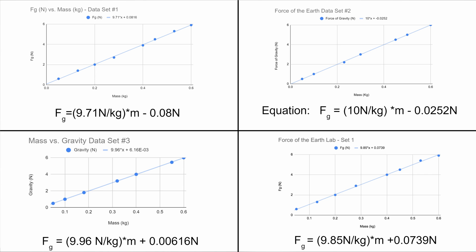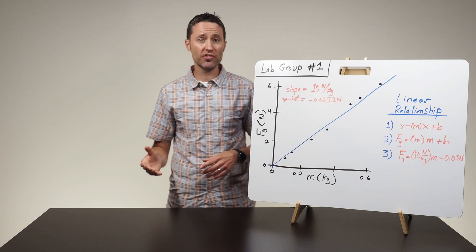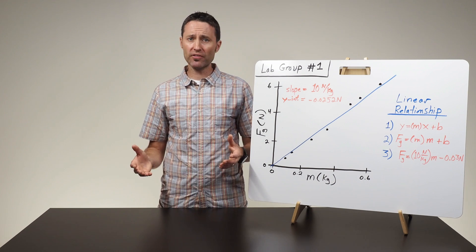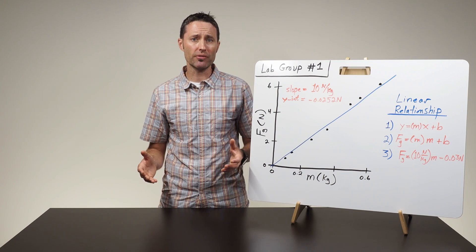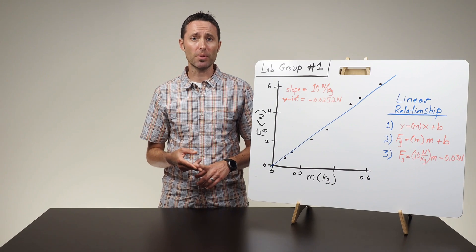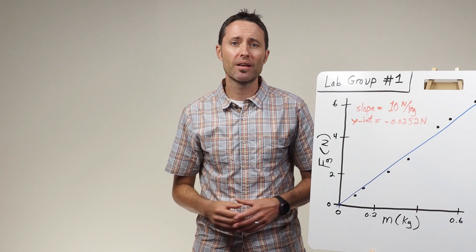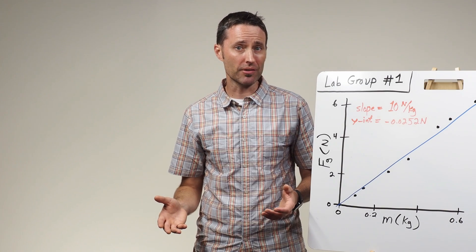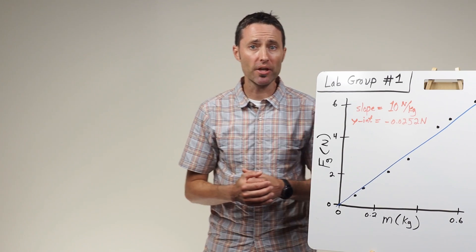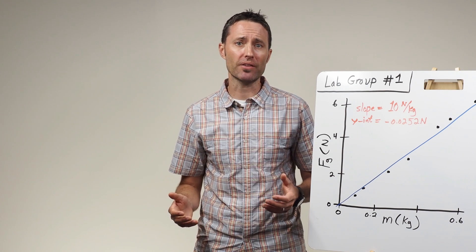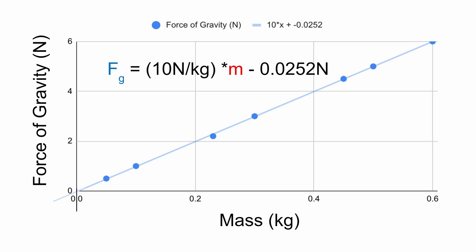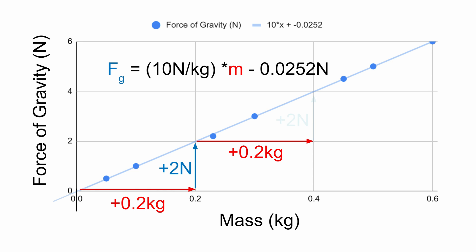Start by asking students to compare the graphs and equations on the whiteboards and identify any similarities or differences they see. For this lab, students will have similar graph shapes, slope values, and y-intercept values. Once the similarities and differences are identified, the rest of the conclusion discussion should focus on what the shape of the graph suggests about the relationship between the variables, the meaning of the slope, and the significance of the y-intercept. After the students identify the shape of all the graphs as linear, ask them what this indicates about the relationship between the force of gravity on an object and its mass. The students should be able to identify that the linear shape suggests that the force of gravity will increase in size by the same amount when the mass is increased in equal increments.